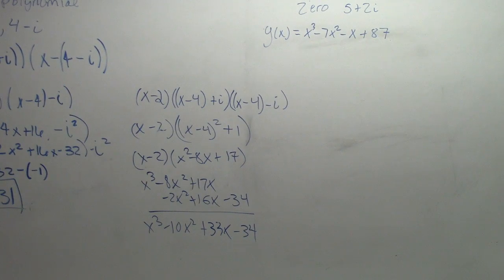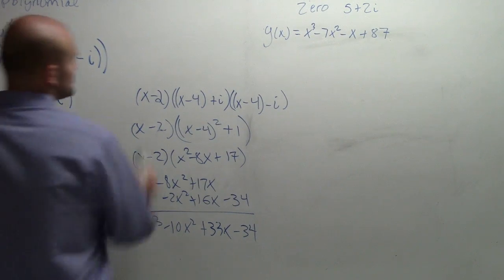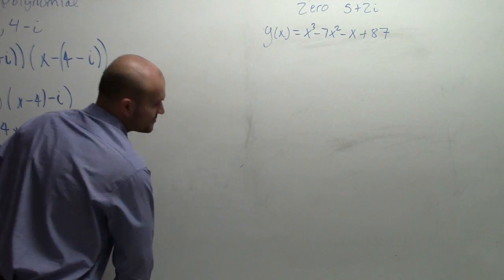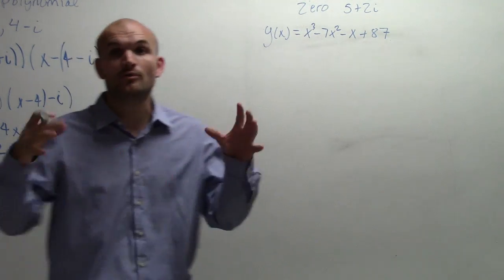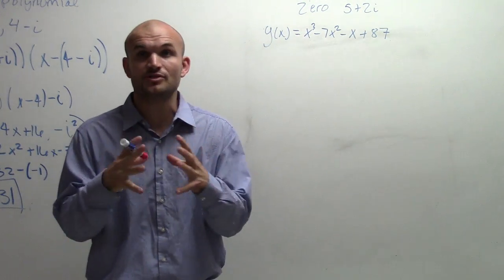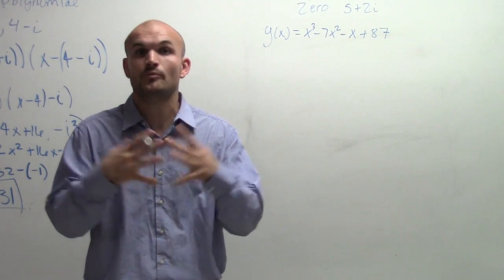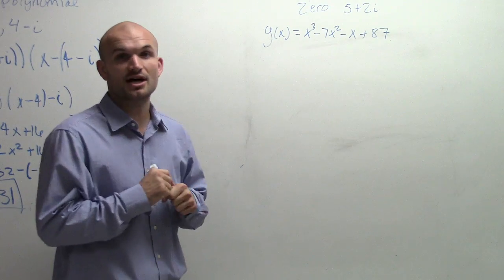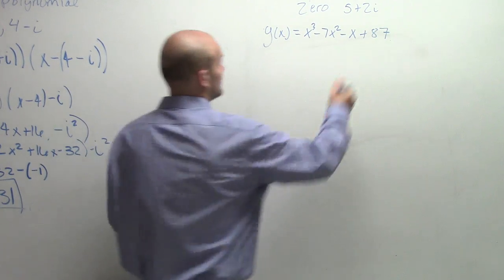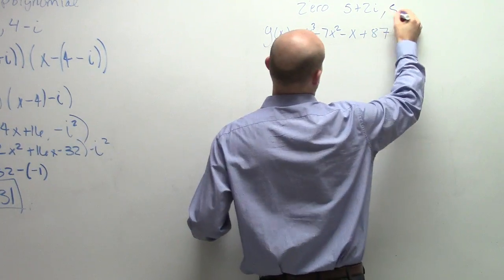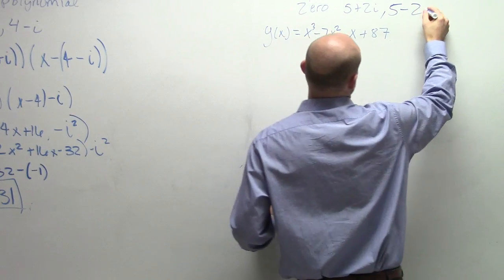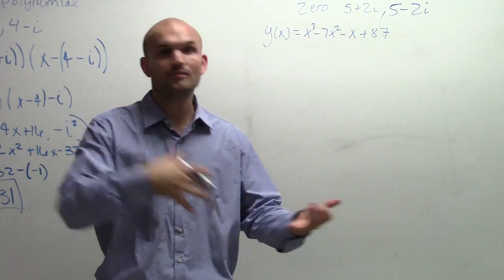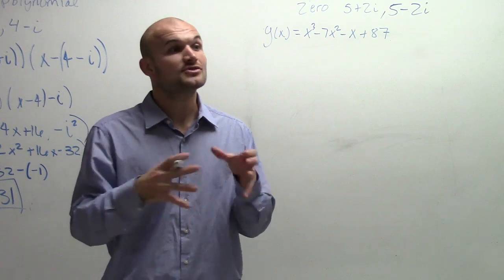So for this one, if we have a zero of 5 plus 2i, what we need to remember is automatically, when we know 5 plus 2i, we know that we also have our other zero: 5 minus 2i. So 5 plus 2i, we automatically have the conjugate 5 minus 2i.